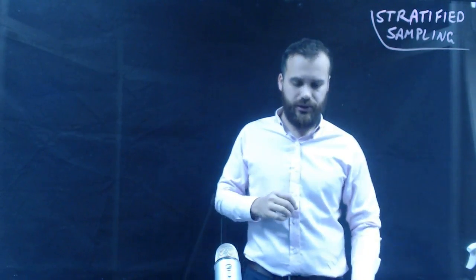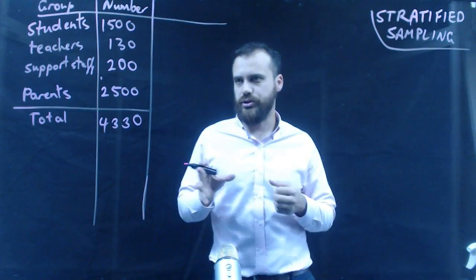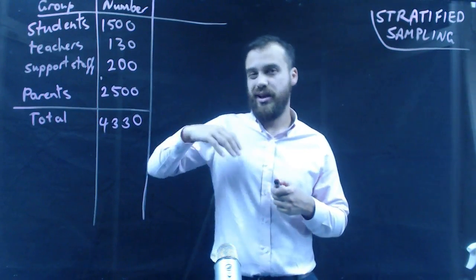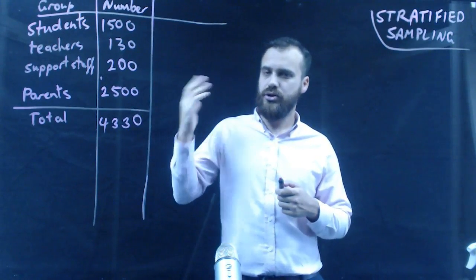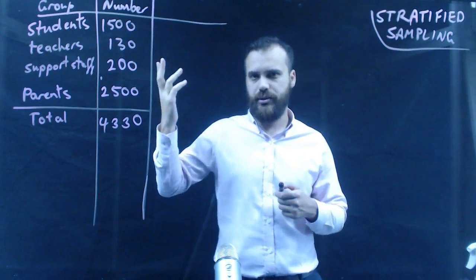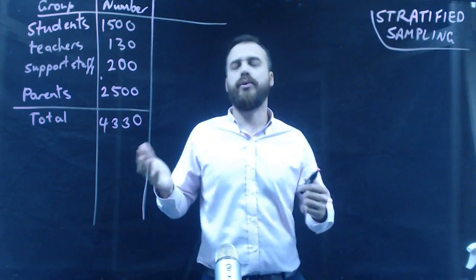All right, so let's look at stratified sampling and how it works. So here's what Nudgee College looks like. We've got 1,500 students, about 130 teachers, 200 support staff, I've just picked that number out of my head, and parents, about 2,500.